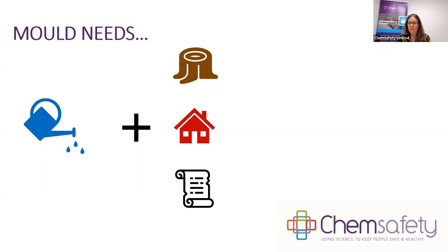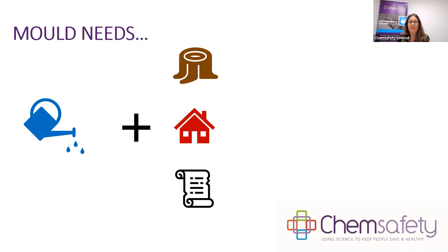Semi-porous materials absorb or adsorb moisture slowly, and if organic can support mould growth. This includes unfinished timber and masonry. Semi-porous materials that have been surface treated do not easily support fungal growth, and this includes finished painted timber, glass, metal and plastic. Absorb means to take in and hold liquid, and adsorb means to hold liquid as a thin film on the outside surfaces.